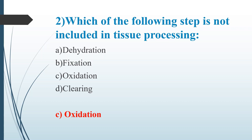The steps of tissue processing are: Fixation (using 10% formalin), Decalcification, Dehydration, Clearing, Infiltration, Impregnation, Embedding, Section Cutting, Deparaffinization, Staining, and Mounting.